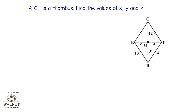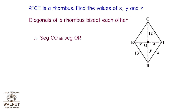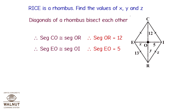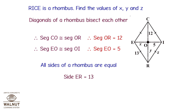RICE is a rhombus. Find the values of X, Y, and Z. Diagonals of a rhombus bisect each other, so segment CO is congruent to segment OR, therefore OR = 12. Segment EO is congruent to segment OI, therefore EO = 5. All sides of a rhombus are equal, so side ER = 13 and side RI = 13.